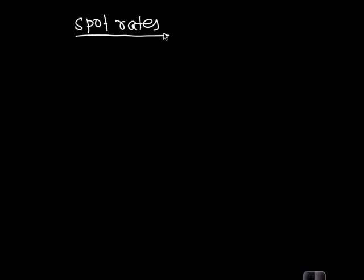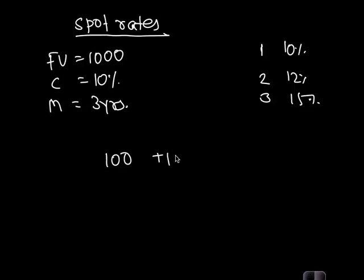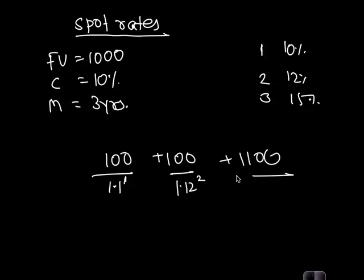The next concept is valuation of a bond using spot rates. Each respective cash flow should be discounted with its respective spot rate. If you have a bond with face value 1000, coupon rate 10%, maturity 3 years, and spot rates of 10%, 12%, and 15% for years 1, 2, and 3, the valuation is: 100 discounted at 10% for 1 year, plus 100 at 12% for 2 years, plus 1100 at 15% for 3 years.